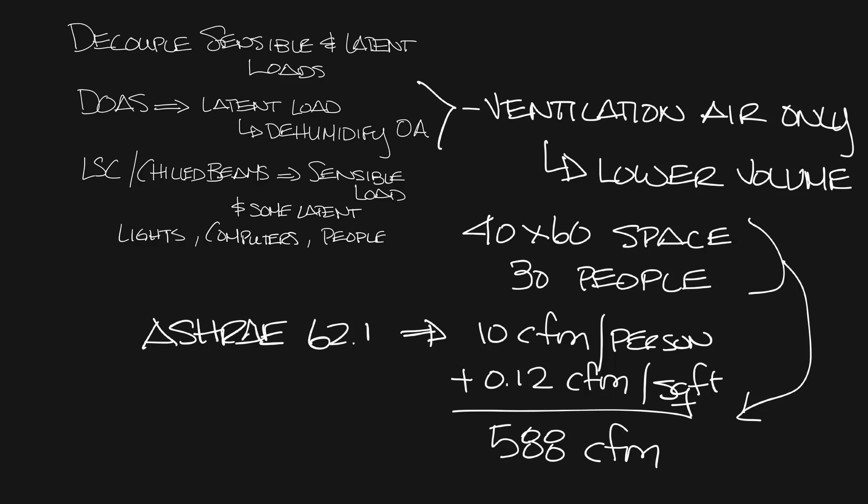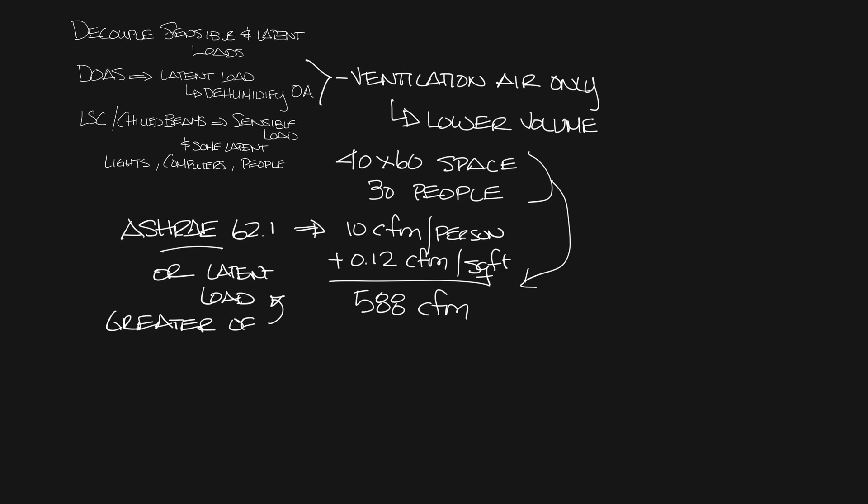So the actual supply air would be the greater of your ASHRAE 62 ventilation or how much air you need to handle any latent load you have in the space. Let me make some room again. So the ASHRAE 62 number is 588 CFM and the latent load gets you somewhere around 900 CFM.